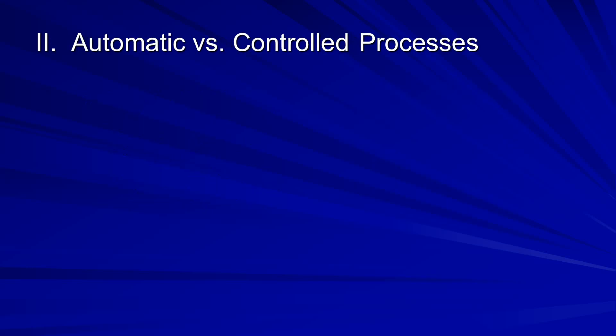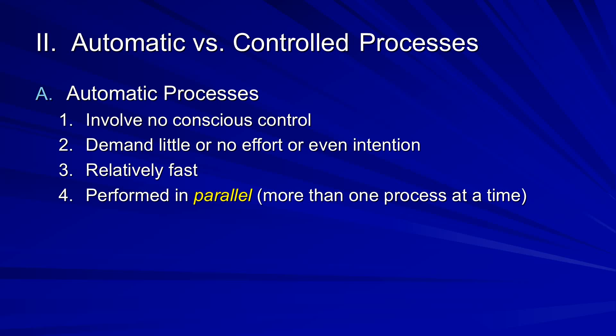An issue that comes up with consciousness is the question of automatic versus controlled processes. Automatic processes involve no conscious control — these are things that occur without conscious awareness. They demand little or no effort or intention, they're performed relatively fast, and they're usually performed in parallel — that is, more than one process at a time. So things that we do automatically, as long as they're not taking up the same resource, can be done at the same time.